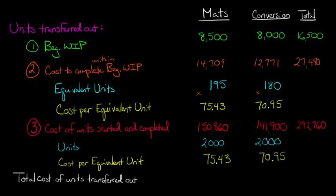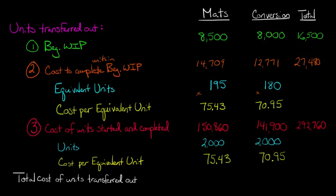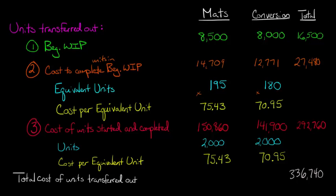The sum of direct materials and conversion costs for units started and completed is $292,760. So we know the cost of units started and completed, we know what we started with in beginning WIP, and we know the cost to complete the beginning WIP. Adding all of that up gives us the total cost of units transferred out during this period: $336,740. I rounded to the nearest dollar so it might be off a few dollars from what you calculate.